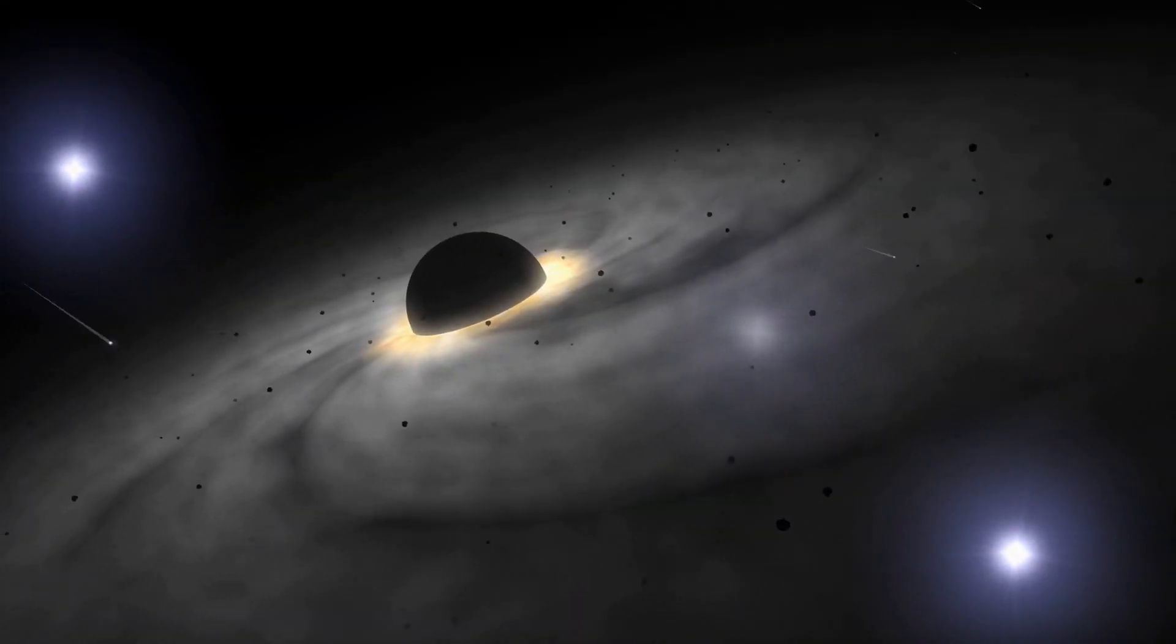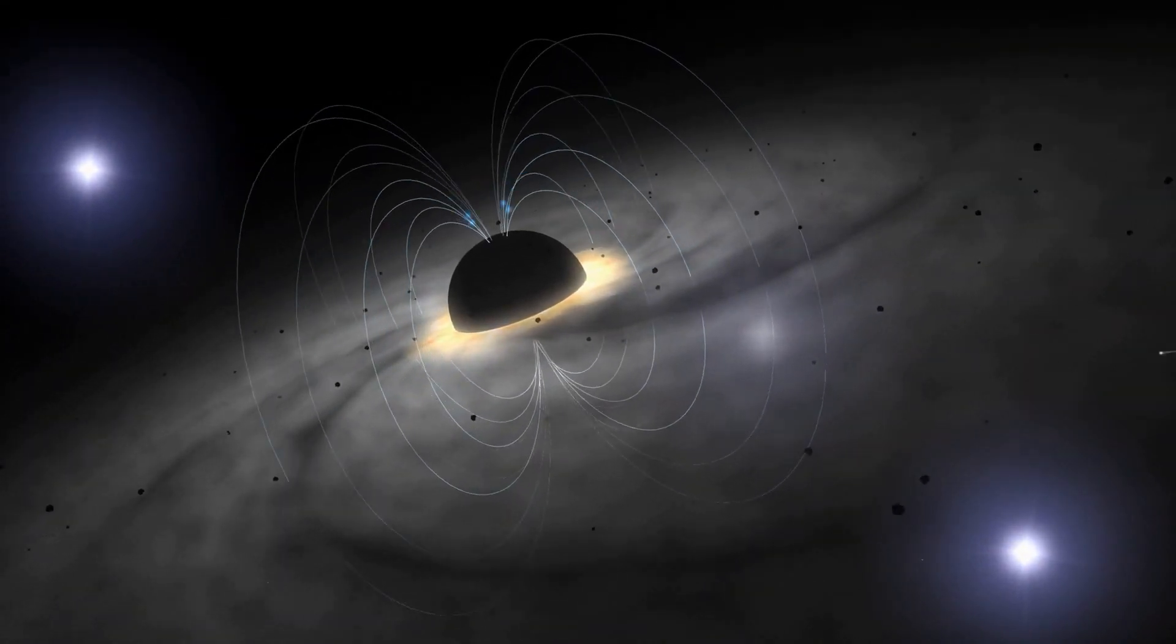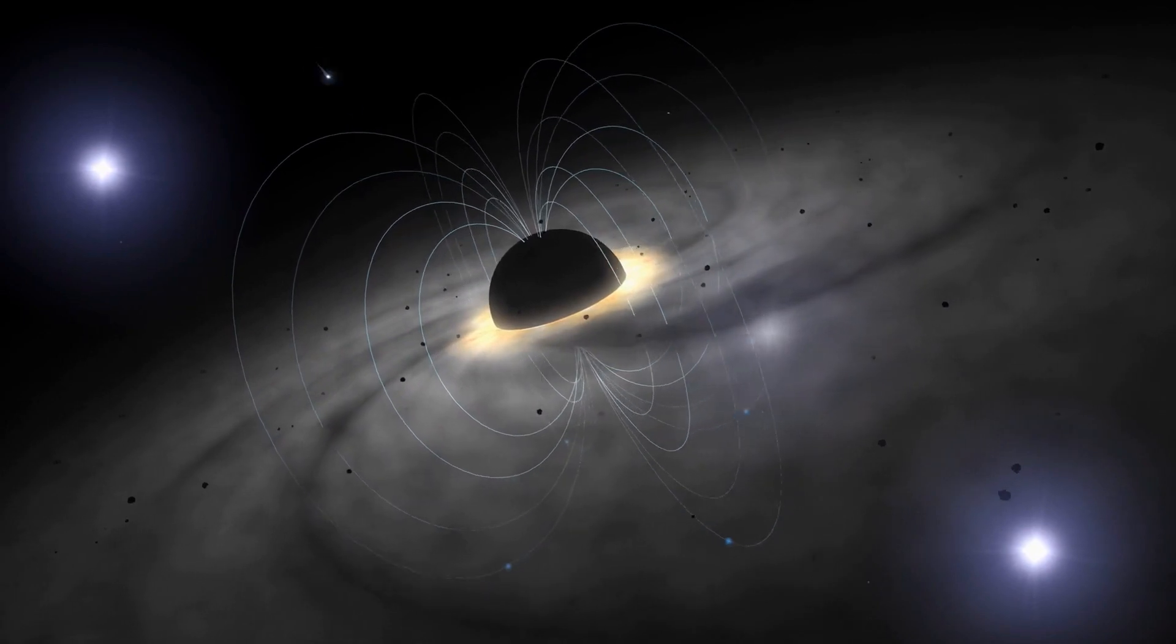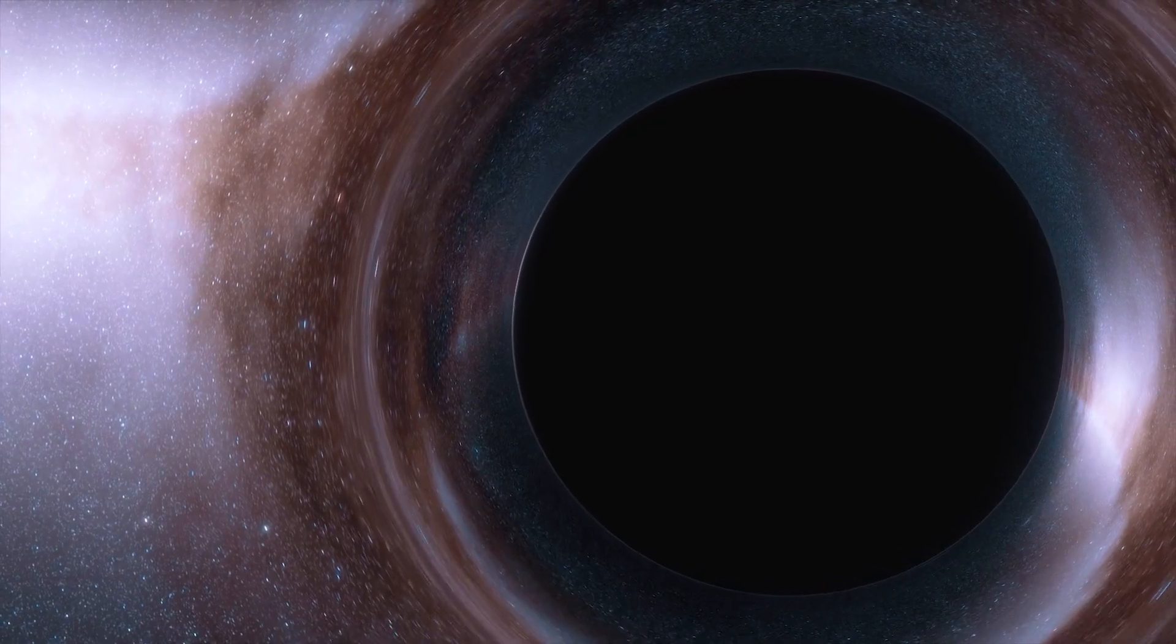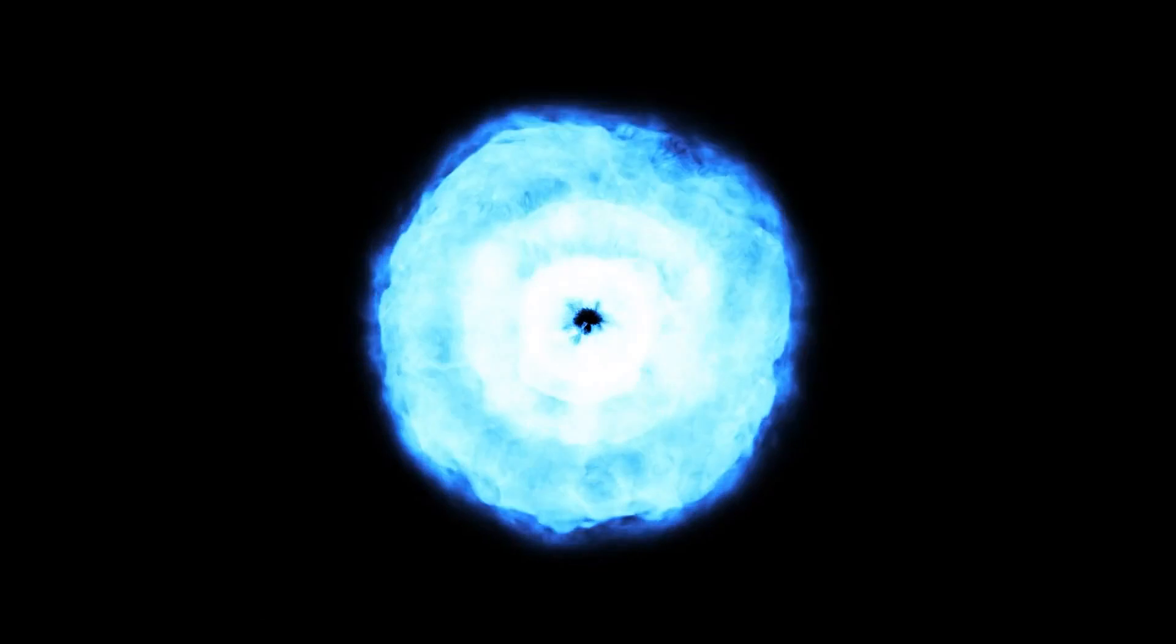There is a chance that the bursts are being caused by a magnetar, which is thought to have arisen from the collapse of a white dwarf star under the influence of its own gravity. Since their discovery, magnetars have been thought to be the origin of short radio bursts.